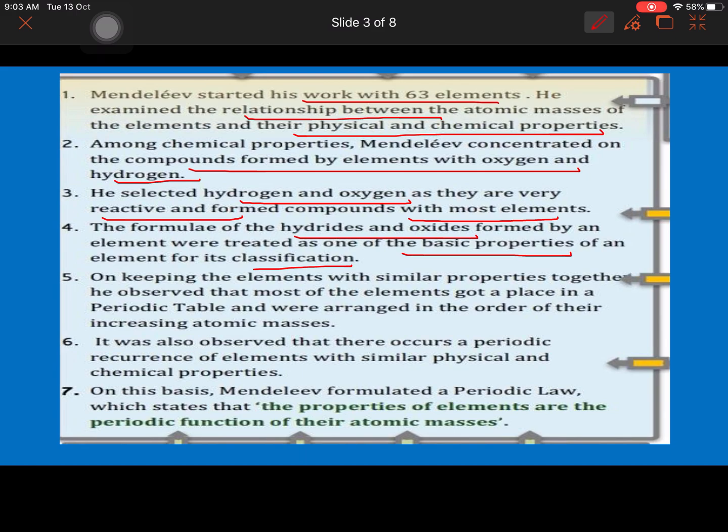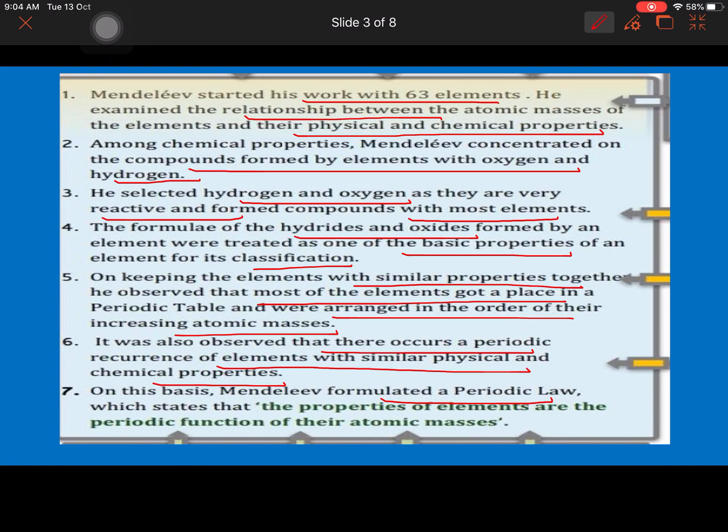On keeping elements with similar properties together, he observed that most elements got a place in the periodic table and were arranged in order of increasing atomic mass. So he started keeping elements on the basis of chemical properties and reaction with hydrogen and oxygen. But when he noticed, he also observed that most elements are getting placed as per atomic mass. It was also observed that there occurs a periodic recurrence of elements with similar physical and chemical properties. So after every interval, the same recurrence of elements with the same properties is seen. Mendeleev formulated a periodic law on this basis: the properties of elements are the periodic function of their atomic masses.